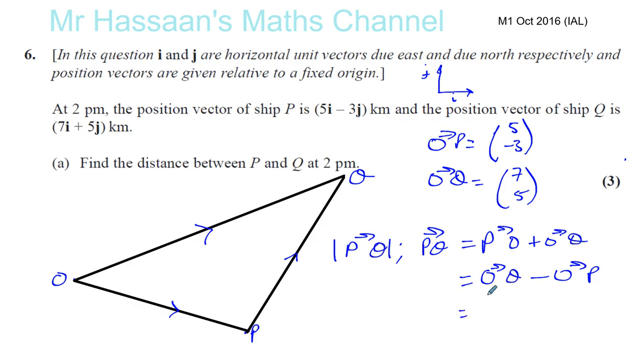All right, so O to Q as we saw was 7, 5, and O to P as we saw was 5 minus 3. And that gives us a vector: 7 minus 5 is 2, and 5 minus minus 3 is 5 plus 3 which is 8. And we can see that kind of makes sense from our diagram. That's like 2 and that's 8. Okay, so that's the vector P to Q. We need to find the magnitude of that vector.